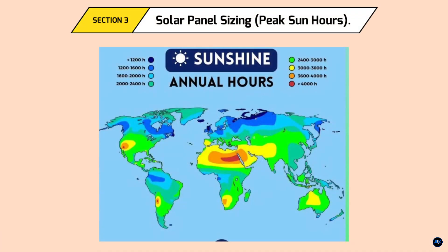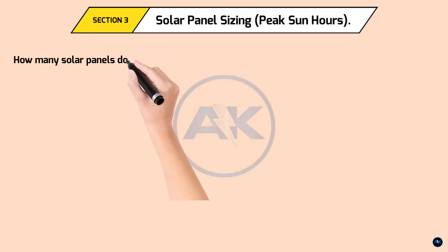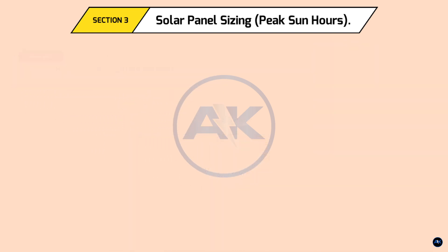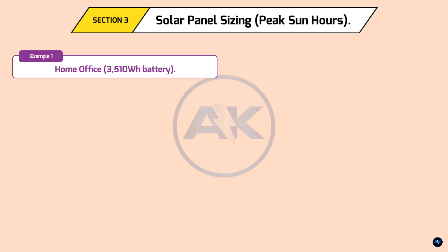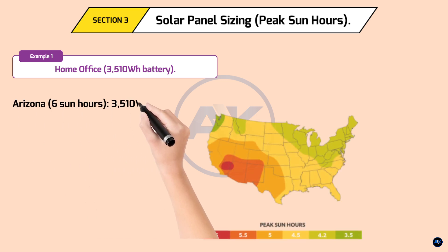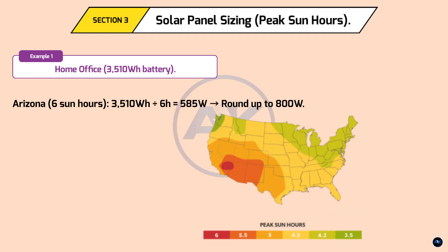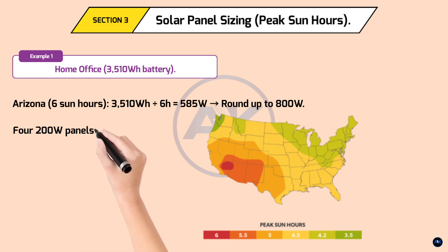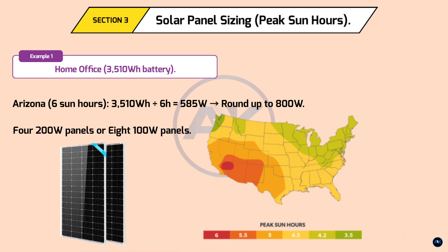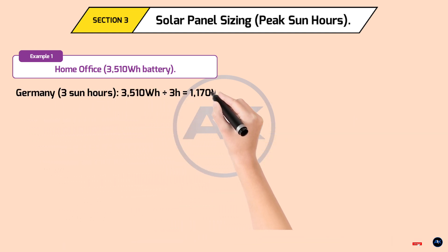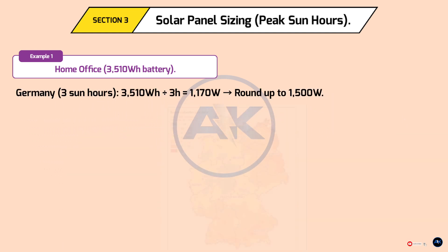Section 3: Solar panel sizing — peak sun hours. How many solar panels do you need? Most places get 3 to 6 peak sun hours daily. Example 1: Home office — 3,510 Wh battery. Arizona (6 sun hours): 3,510 ÷ 6 = 585 watts, round up to 800 watts — four 200W panels or eight 100W panels. Germany (3 sun hours): 3,510 ÷ 3 = 1,170 watts, round up to 1,500 watts.